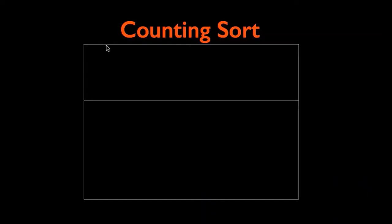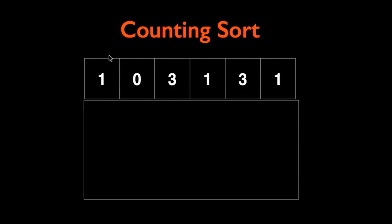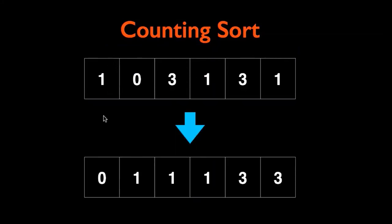Let us understand counting sort. As an example, we are trying to sort this array into ascending order. Counting sort works well when we are having elements in a small range, and for this case the range is from 0 to 3.